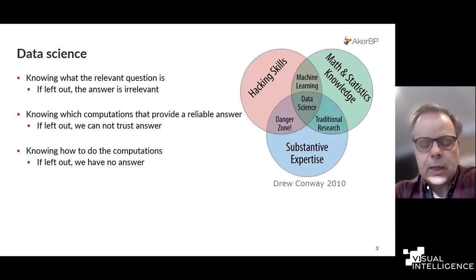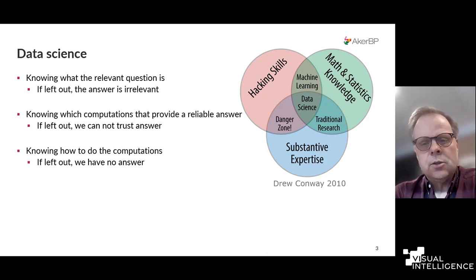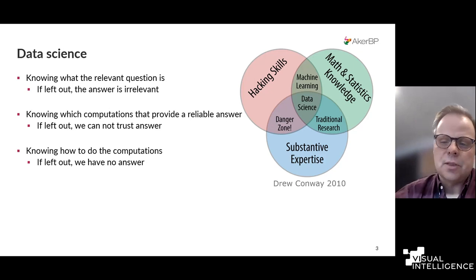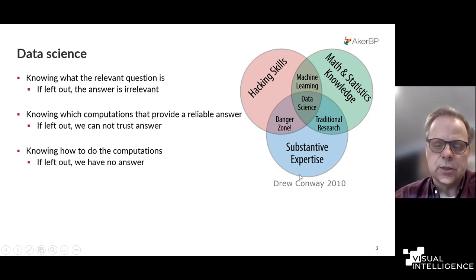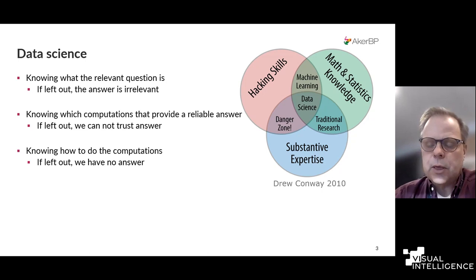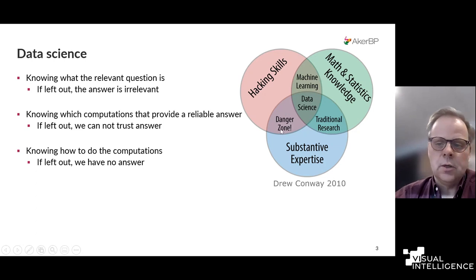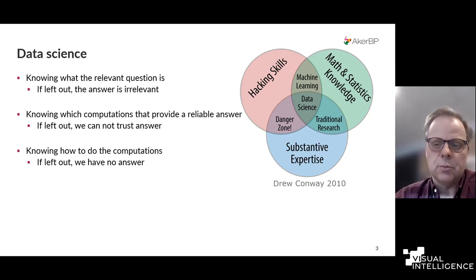To give a bit of my background and my view on data science: I really like this Drew Conway Venn diagram, where you can see the different parts of what is needed for a proper data science project. I like it because I'm in math and statistics, so I'm not in the danger zone. But really, each of the corners and the two-way overlaps have their own problems. If you don't have the substantive expertise, then whatever you find out is deemed irrelevant because you haven't put it in the right context.